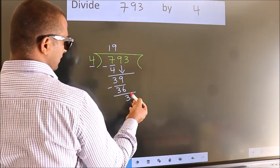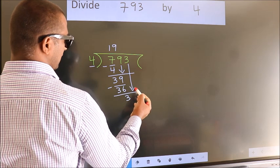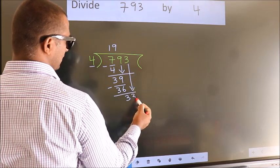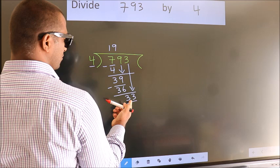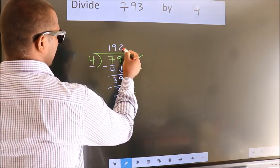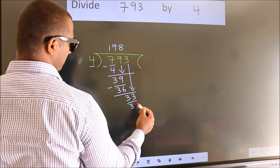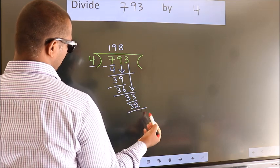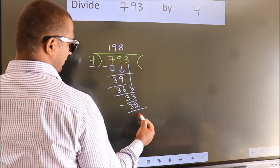After this, bring down the beside number, so 3 down, so 33. A number close to 33 in 4 table is 4 eights, 32. Now we subtract, we get 1.